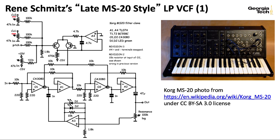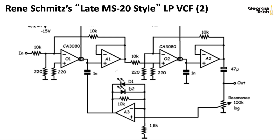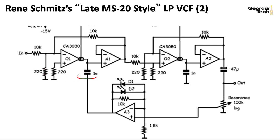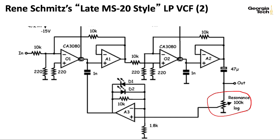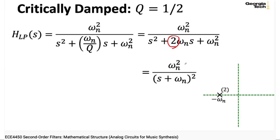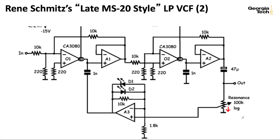Down here there's a pot to set an overall offset, and up here there are a couple of control voltages that come in. Unlike the pitch input, these have potentiometers that control the amount of influence each control voltage has. The pitch input is probably coming from a keyboard, but these control voltages may be coming from envelopes or low frequency oscillators. Rene is using two CA3080 OTAs. If you're building this now, I would recommend using the LM13700 because those are easier to find.